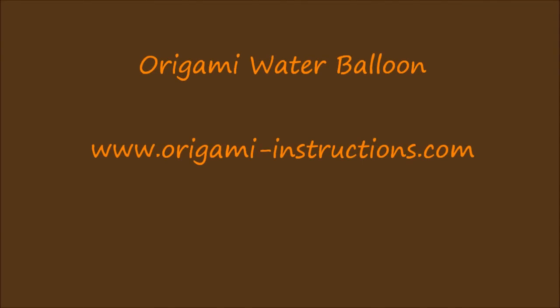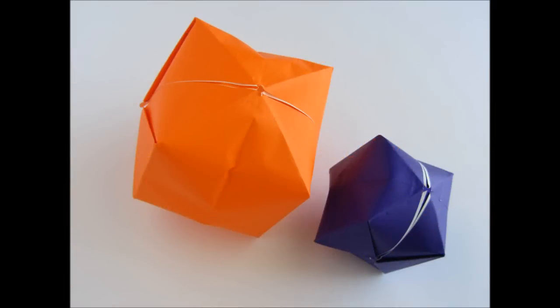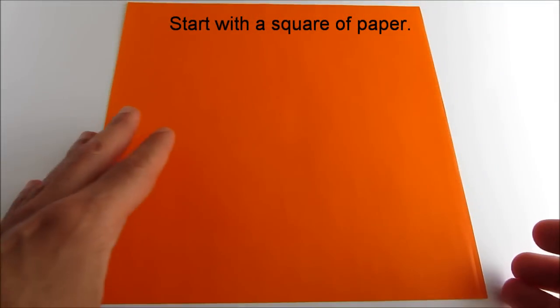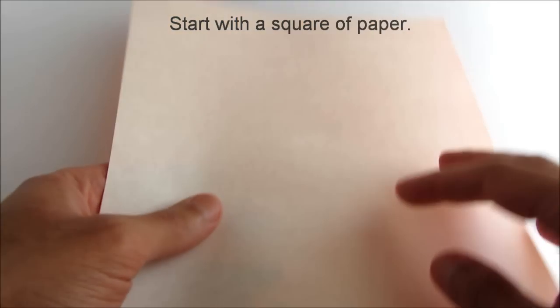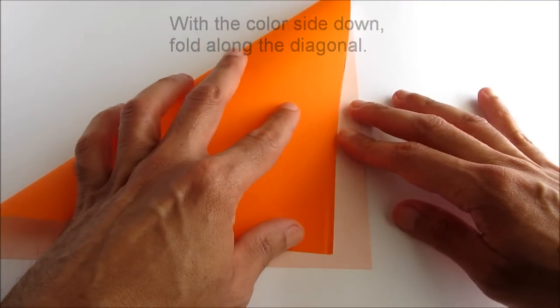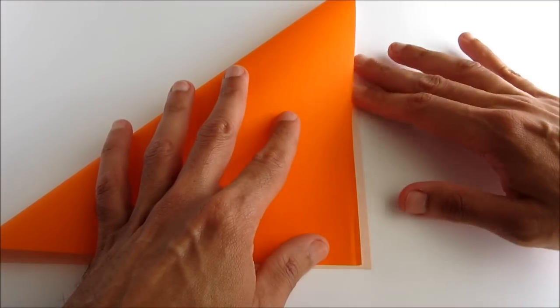Hello and welcome to our Origami Water Balloon video. To make the water balloon, you need a square of paper. Start with the color side down and fold along the diagonal as we're showing here.